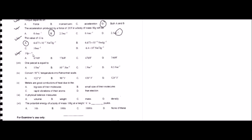Question number seven: 1 hp equals what? HP is short for horsepower. One horsepower equals 746 watts. Checking the options: A is 674 watts — not correct; B is 776 watts — not correct; C is 476 watts — not correct; D is 746 watts — that is the correct answer.